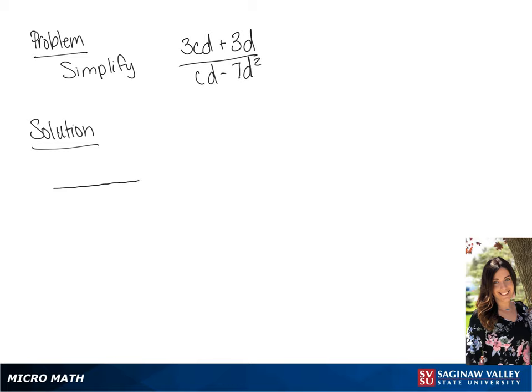We are going to simplify this fraction. In the numerator, we can factor out 3d, so we have 3d times c plus 1.